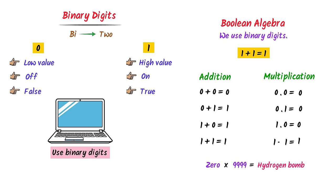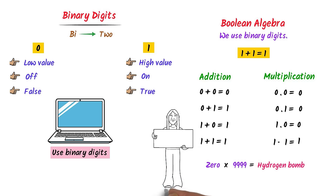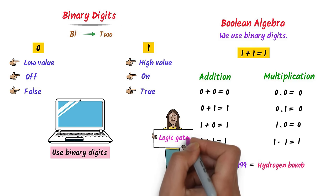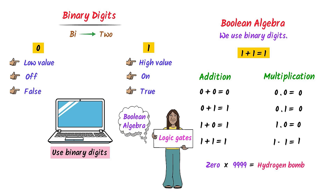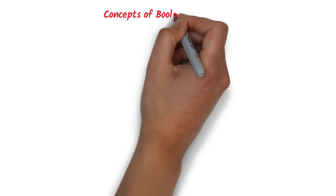In Boolean algebra, all mathematical operations are the same as normal algebra except that 1 plus 1 equals 1. Now, if you want to learn logic gates, you must learn Boolean algebra. Without it, you cannot learn a single concept of logic gates. I will teach you some basic concepts of Boolean algebra.